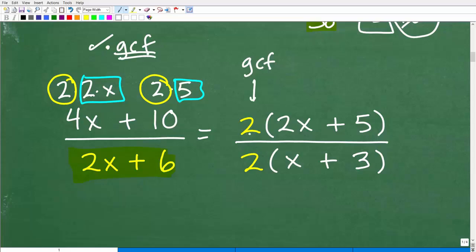And I can always check this, by the way. Anytime you factor, you can always check by multiplying back in. So 2 times 2x. Yes, I would get 4x. And then 2 times this 5, I would get 10. So that is correct. Okay. So now I can do the same thing down here with 2x plus 6. I can factor out a 2. That leaves me with an x plus 3. And here is our work right here.